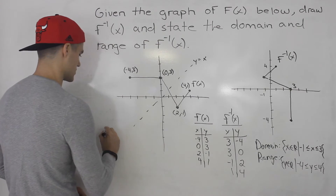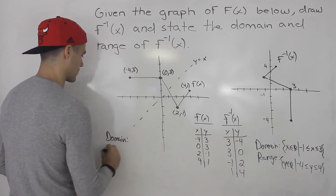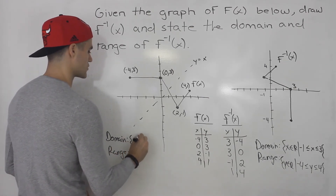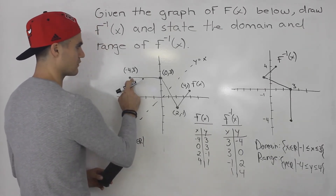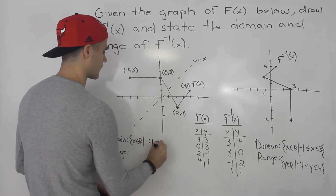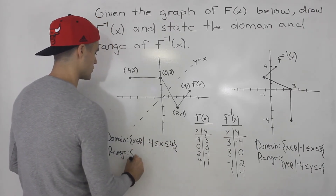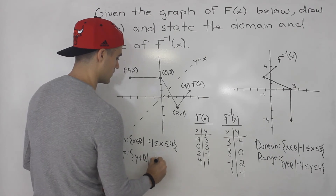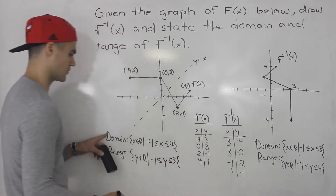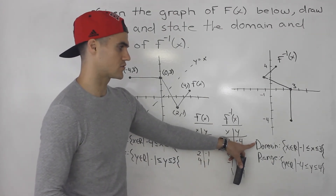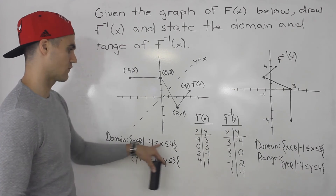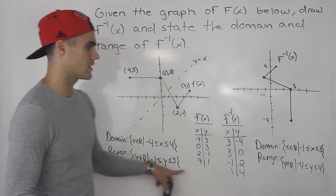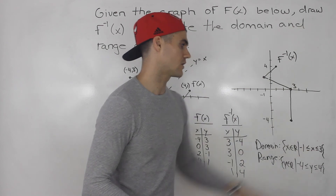Just to show you — if we take the domain and range of the original function, the domain is between negative 4 and positive 4, and the range has y values between negative 1 and positive 3. Notice how the domain and range are just switched for the inverse. The domain of the function is between negative 4 and 4, and the range of the inverse is between negative 4 and 4. The range of the function is between negative 1 and 3, and the domain of the inverse is between negative 1 and 3.